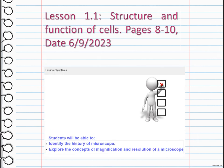Later, we are going to identify and explore the concepts of the history of microscope. In microscope, we have two main concepts that we are going to understand, which is magnification and resolution of a microscope.